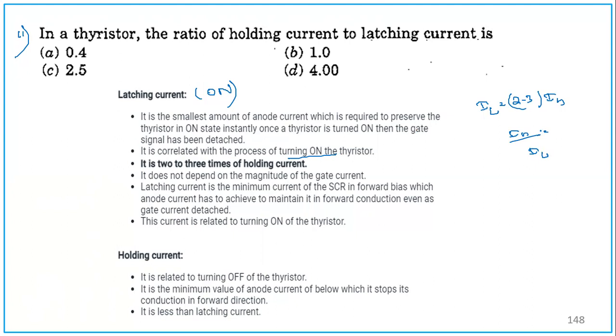In this question, the ratio of holding current to latching current, iH by iL, they are asking. Definitely it should be less than 1. Because iL by iH, iH by iL is 1 by 2 or 1 by 3. It should be definitely less than 1. We can go for option A. And it does not depend upon the magnitude of the gate current. Holding current is related to turning OFF of the thyristor. It is a minimum value of anode current below which it stops its conduction in forward direction. It is less than the latching current. Holding current will always be less than latching current.